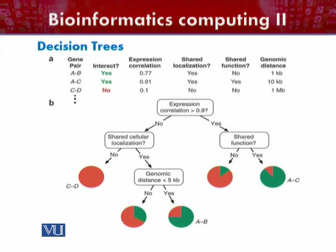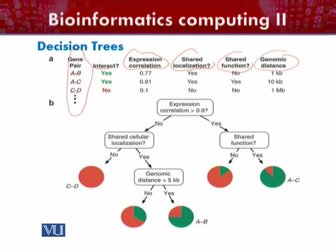This diagram represents a popular problem from the domain of biology that has been solved with the help of decision trees. In this biology domain example, we have some gene pairs — for example, gene pairs A, C, D, and so on — and we have some attributes of these gene pairs, such as interaction, expression correlation, shared localization, and shared function.